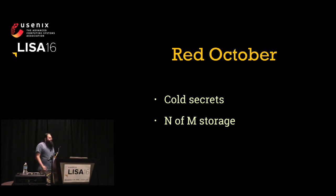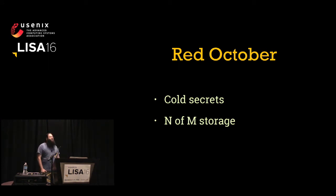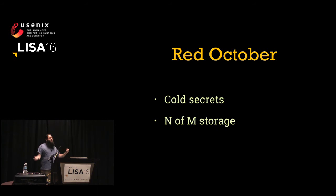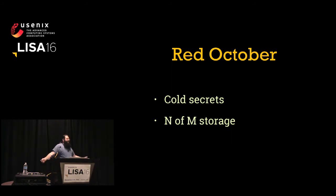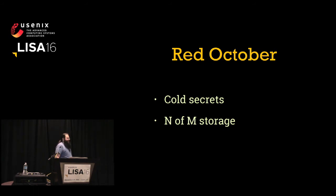Red October from Cloudflare is very different — built from the ground up for cold secrets. Like turning two keys simultaneously to launch a missile, it uses a key split algorithm, also called N-of-M key split or secret sharing, that allows you to designate this secret requires, say, three of five key holders to coordinate in order to unlock it. It's built for high-value cold secrets like AWS master passwords or GPG top-level revocation certificates.